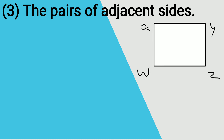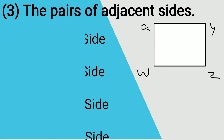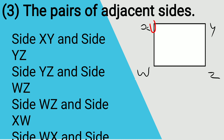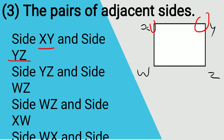Then the pairs of adjacent sides — sides which share a common vertex are called adjacent sides. For vertex X, the adjacent sides are XW and XY. Then XY and YZ share vertex Y. Then YZ and WZ share vertex Z. And WZ and XW share vertex W. These are the four pairs of adjacent sides.